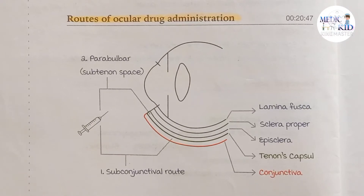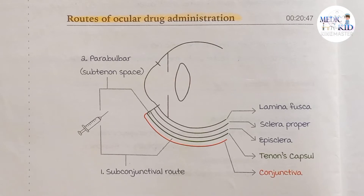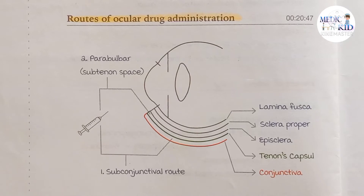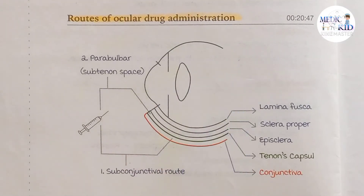Hello everyone, welcome to another video on ophthalmology. Today's topic is routes of ocular drug administration. Whenever we get an infection or pathology of the eye, we go to the doctor and they give us medication. In the case of the eye, we use eye drops, eye ointment, etc., given topically. But there are various routes by which we can administer a drug.